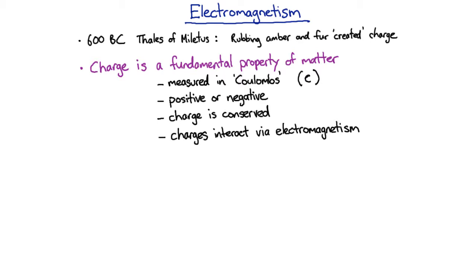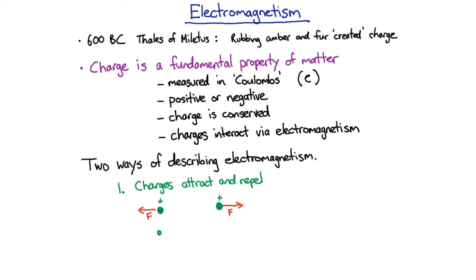Now, there's two ways of thinking about electromagnetism, which are almost equivalent. The first is that charges attract and repel. In other words, if I have two positive charges, they'll each experience a force due to the other one, and that will cause them to repel. Same if they're both negative charges. And you might already know that if I have a positive charge and a negative charge, then they'll experience a force that is attractive.